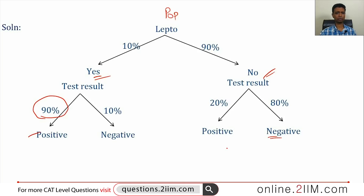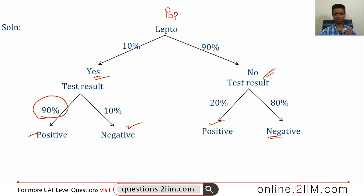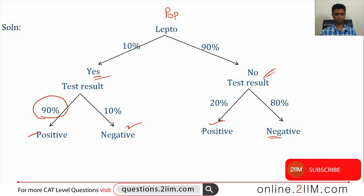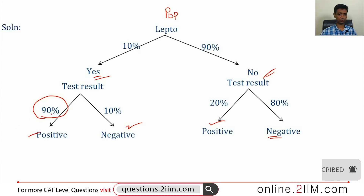If the person does not have lepto, there is an 80% chance the result will say the person does not have it. If a person has lepto, there is a 10% chance the result will be negative. If the person does not have lepto, there is a 20% chance the result will be positive. This grid captures four combinations: has lepto with positive/negative result, and does not have lepto with positive/negative result.